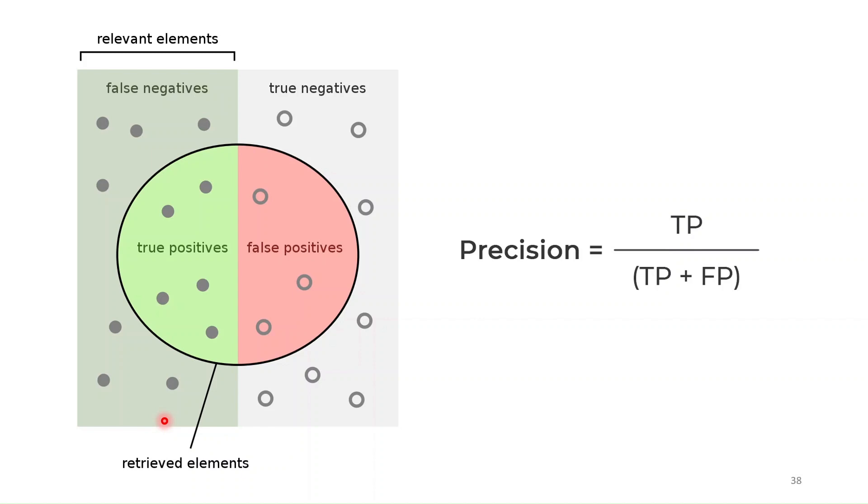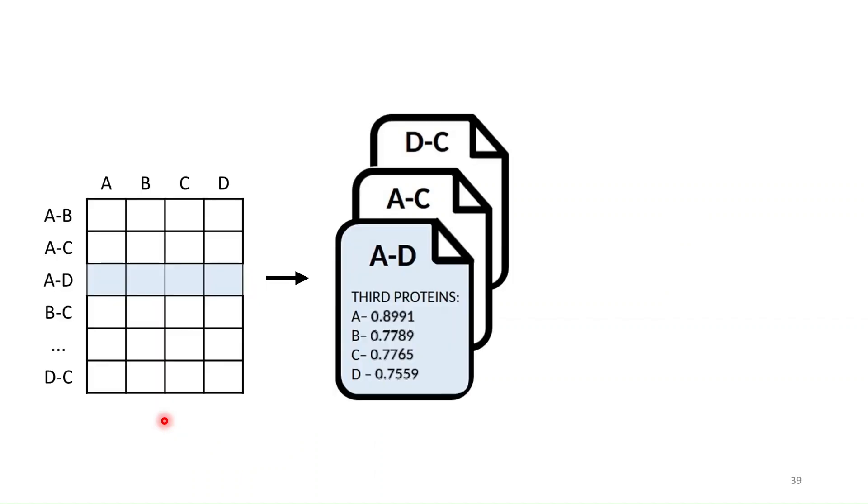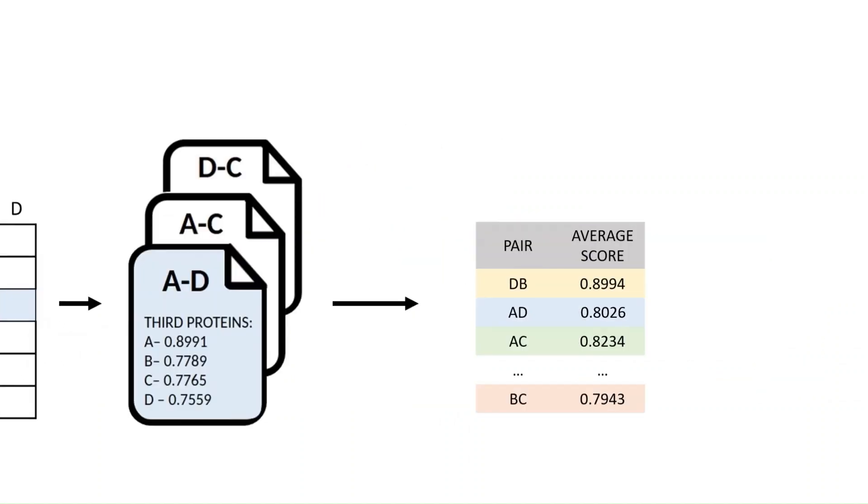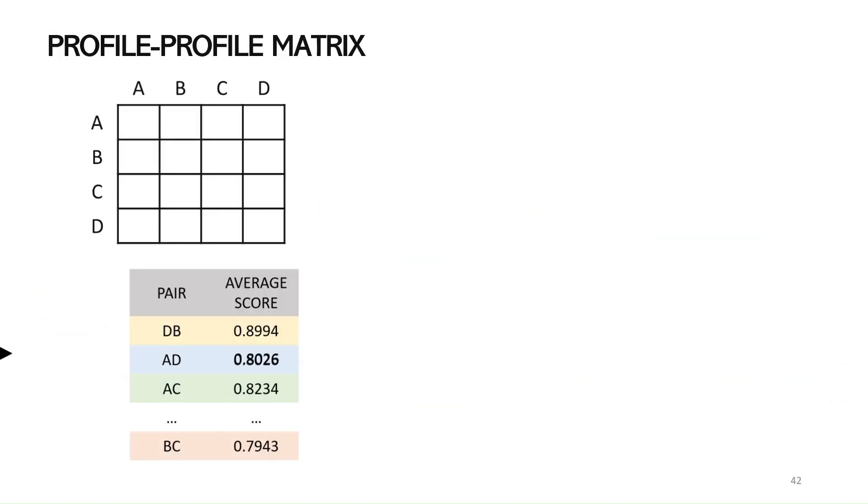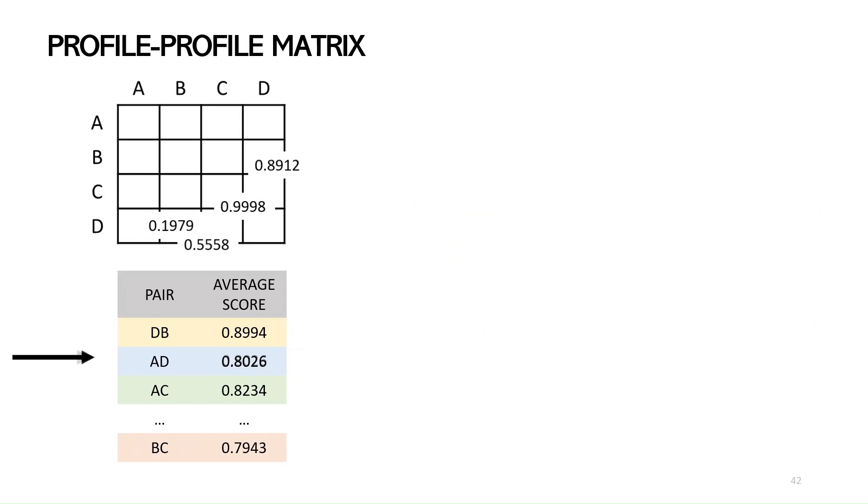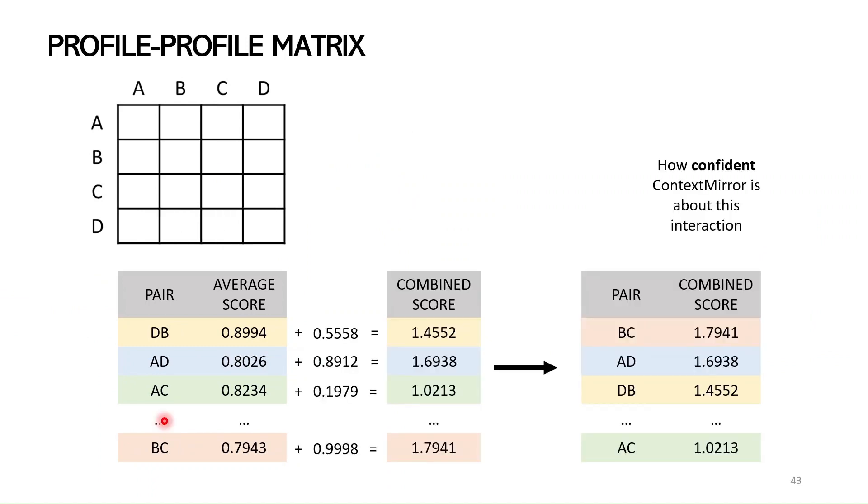The thing is that before we knew which predictions are the best we have to develop a ranking system, and we tested different ways but in the end we found out that the best way was to make an average as a representative of the tree-tree matrix and then integrate this average with the information taken from the profile-profile matrix to create some kind of a combined score that acts as a confidence score to see how confident context mirror is about each of these interactions.